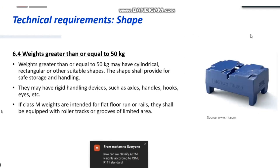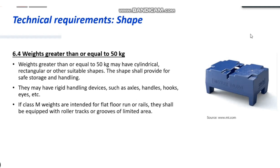For weights greater than or equal to 50 kg, it's even heavier. They can be cylindrical — for higher class weights — or rectangular, or other suitable shapes. The key point is that the shape should provide for safe storage and handling so that you don't contaminate it too easily. For easier handling, there can be axles, handles, and hooks as well. For class M weights, even more can be added — for example, roller tracks or grooves of limited area can be added for flat floor runs or rails, again for easier handling.